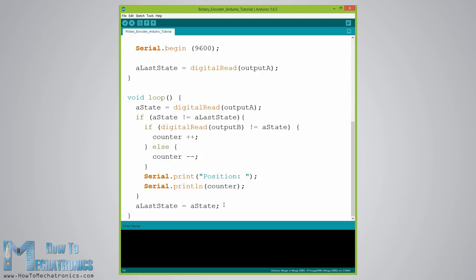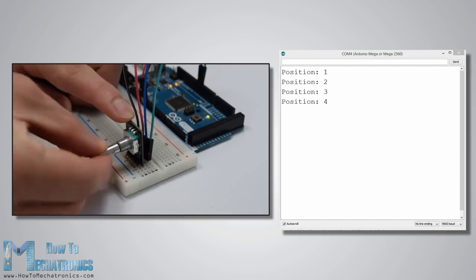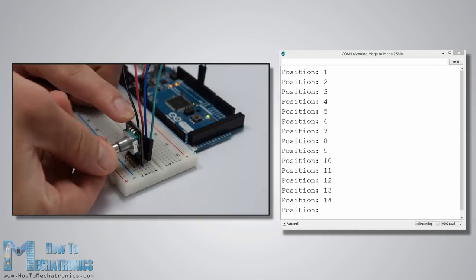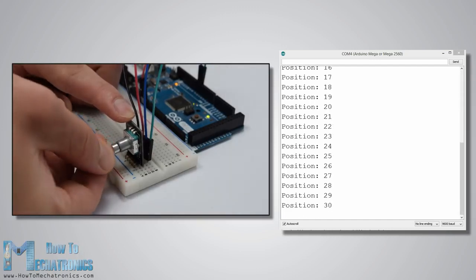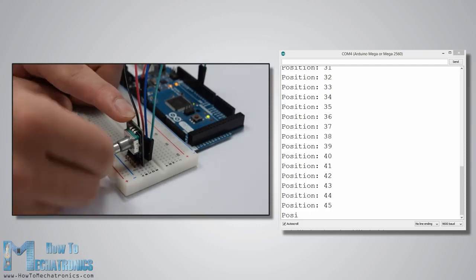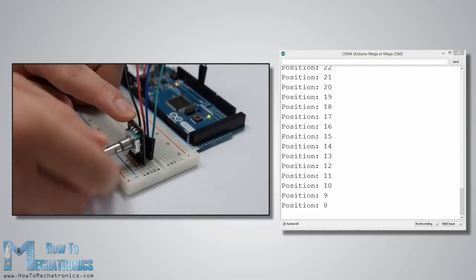That's all we need for this example and here's its demonstration. If we start rotating the encoder, we will start getting the values in the serial monitor. The particular model that I have makes 30 counts each full cycle.